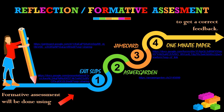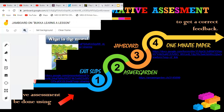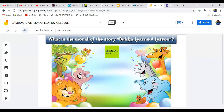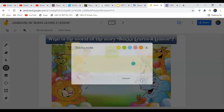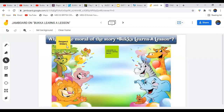In the case of Jamboard, a question is given and students are instructed to answer using sticky notes. They collect a sticky note and type their answer — for example, 'Respect elders' — and click Save. The answer will be saved on the Jamboard.